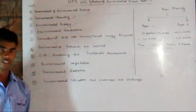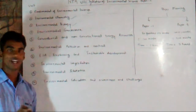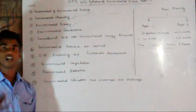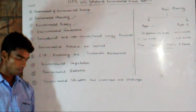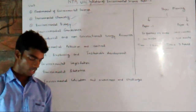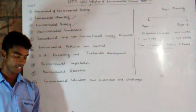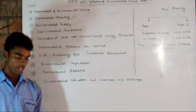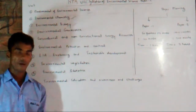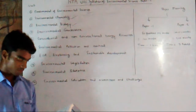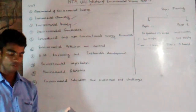Topics such as food chains, common flora and fauna in India and the world, and biodiversity will all be discussed in this unit. We will also cover endangered and threatened species and their categories.